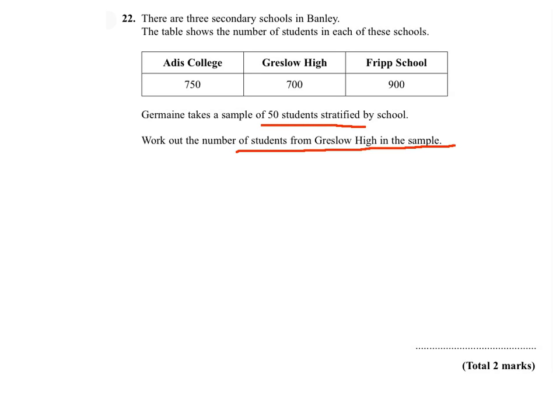The first thing we need to do is work out the total number of students in the three schools. So it's 750 add 700 add 900. This will give us in total 2,350 students.